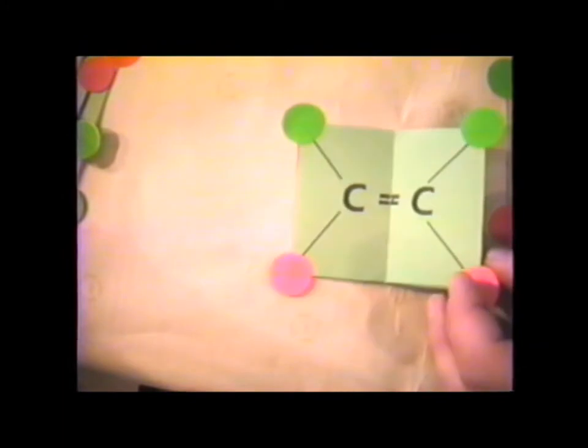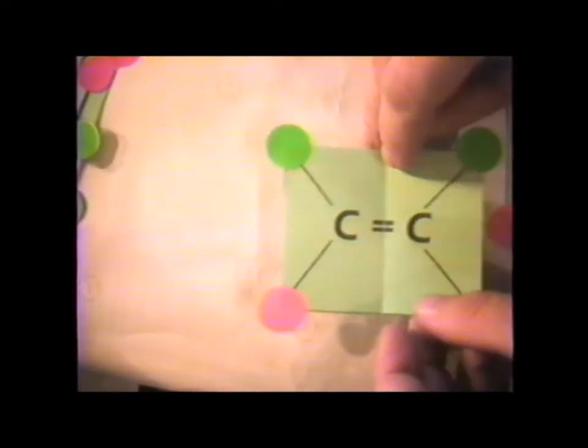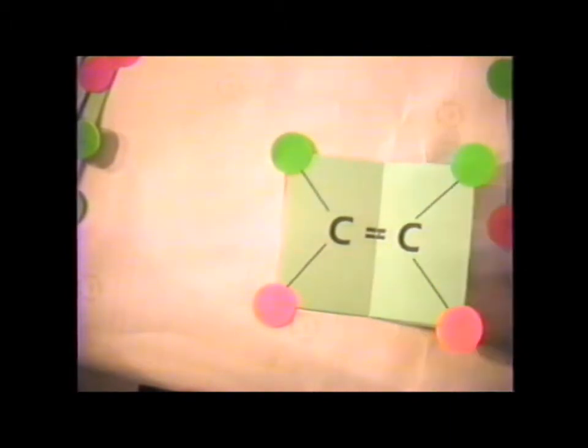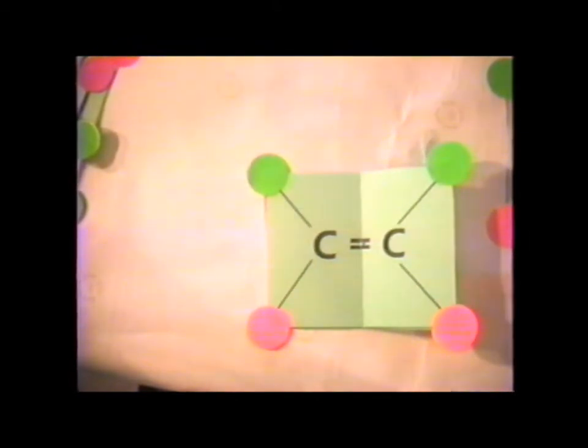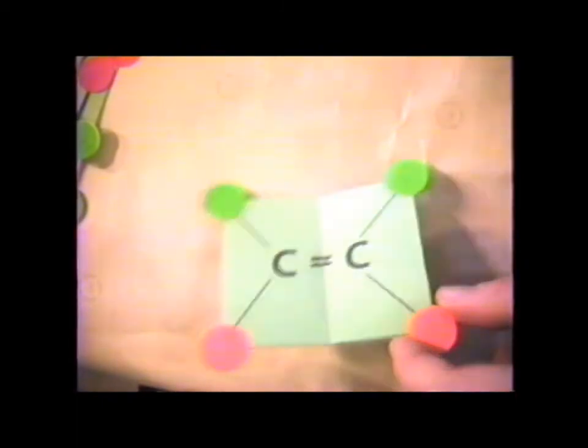So we have a mirror this way, a mirror this way. We have the identity operation, and we have our C2. So we have four symmetry operations. This is the point group C2V. So we see that C2V not only being the point group of water, it is also the point group of cis-dichloroethylene. This is a very common substitution pattern with ethylene.